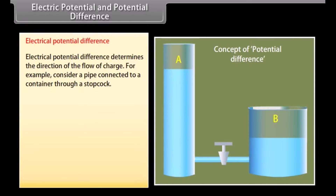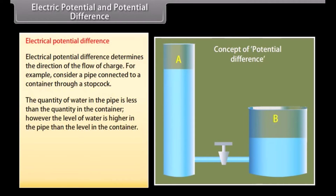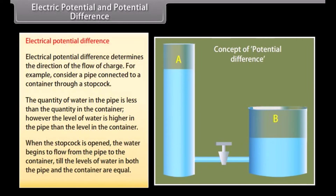Electrical potential difference determines the direction of the flow of charge. For example, consider a pipe connected to a container through a stop cork. The quantity of water in the pipe is less than the quantity in the container; however, the level of water is higher in the pipe than in the container. When the stop cork is opened, water begins to flow from the pipe to the container until the levels are equal. This shows that it is not the quantity of water but the level of water which decides the direction of flow — it is the potential difference that is responsible for the flow.